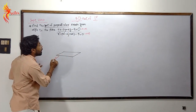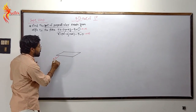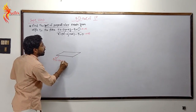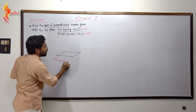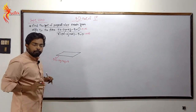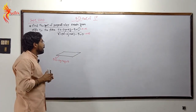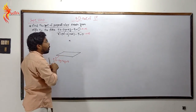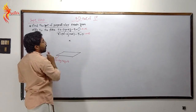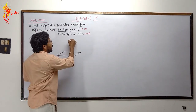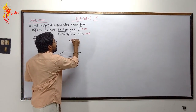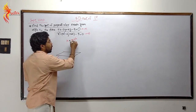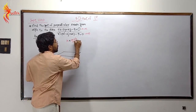Let's look at the question: 5x minus 2y plus 4z minus 9 is equal to 0. Now, the origin is the point (0, 0, 0).